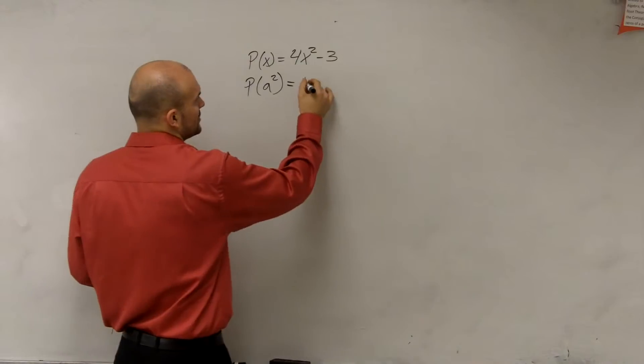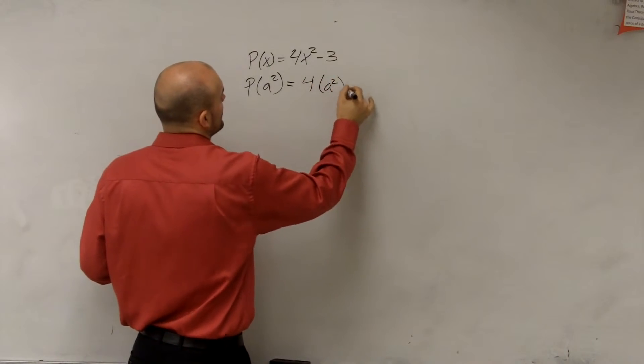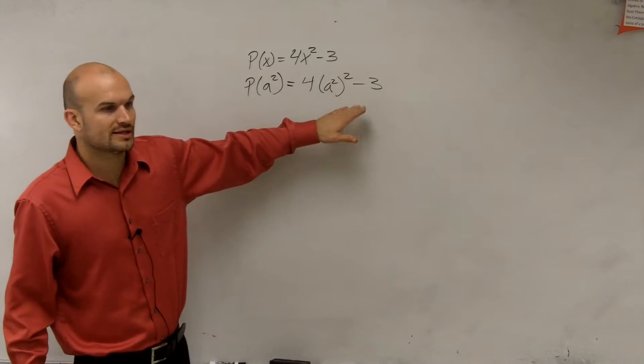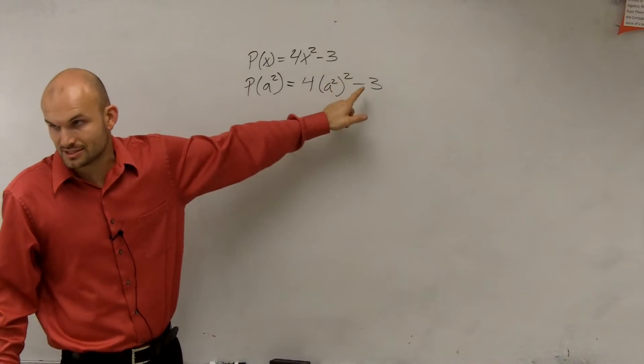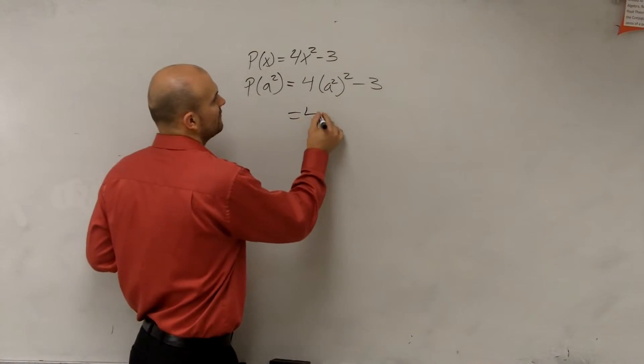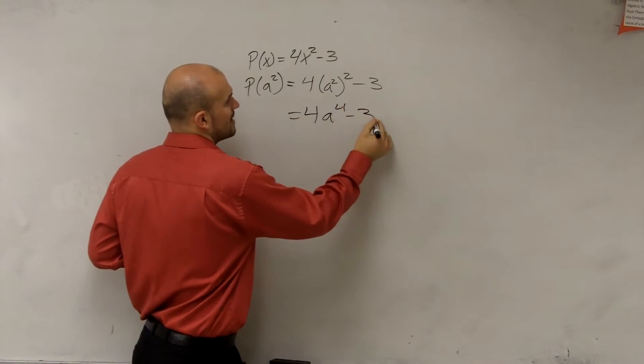So this is going to equal 4 times a squared squared minus 3. Now when we look at this, remember a squared raised to the power, power of power, you multiply. So you're going to get 4a to the fourth minus 3.